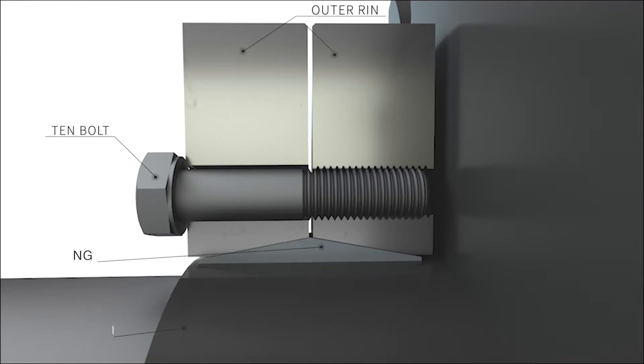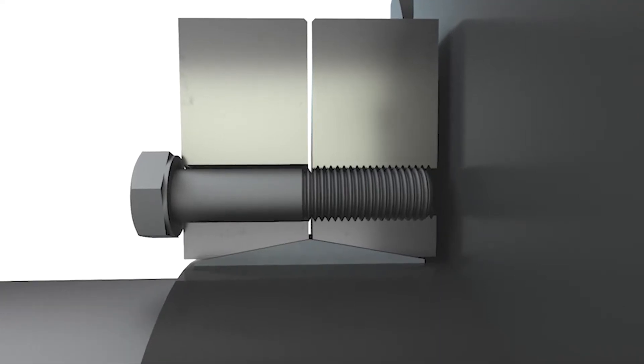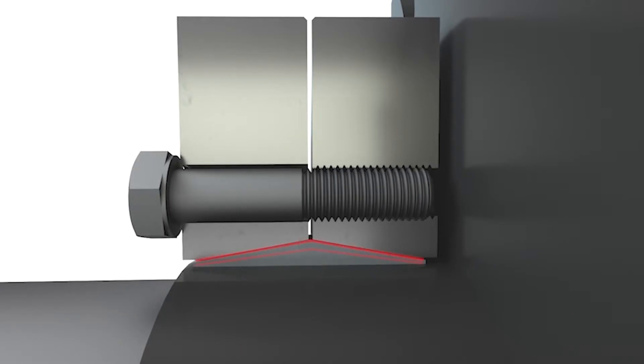Inside the shrink disc, the thrust rings feature a set of mating-tapered surfaces, which generate the compression forces as the locking screws are tightened.